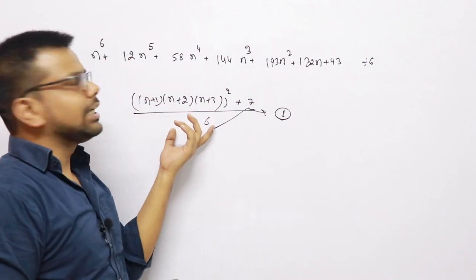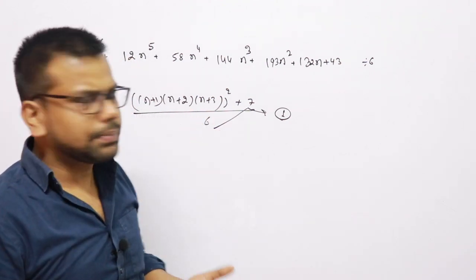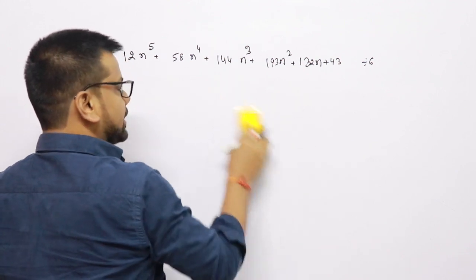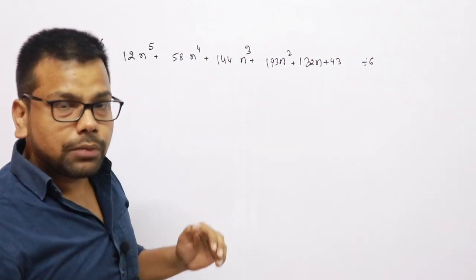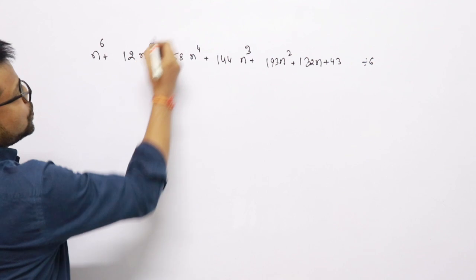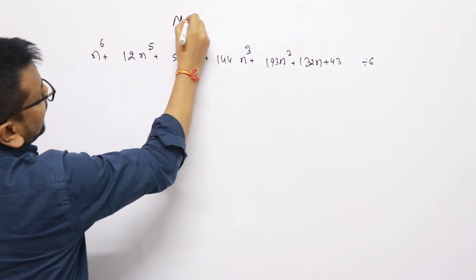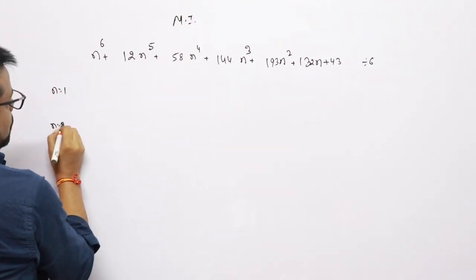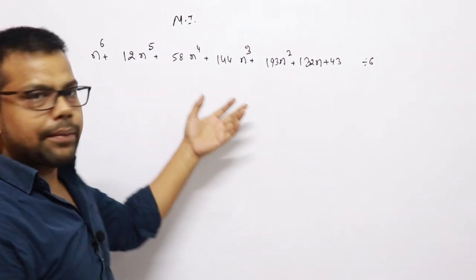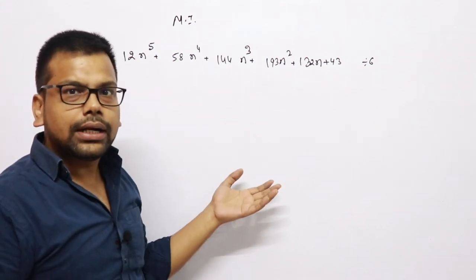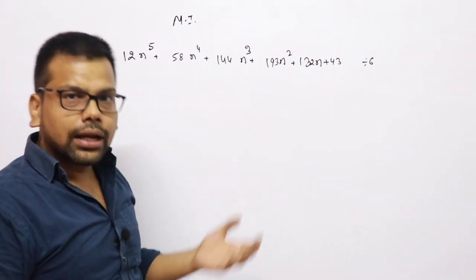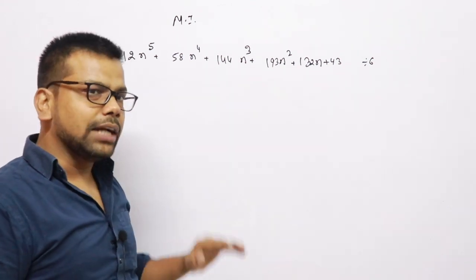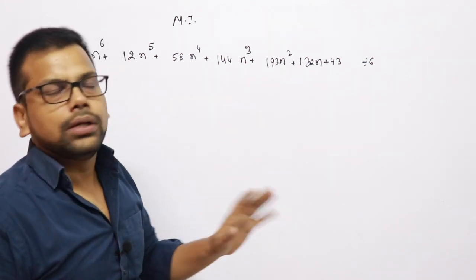So how do we solve these questions when options cannot be determined? We are going to use Mathematical Induction (MI). We put n equal to 1 and n equal to 2 and check: is the remainder the same or different? If there is a different remainder, it cannot be determined. If the remainder is the same, there is a 99% chance the remainder is consistent.